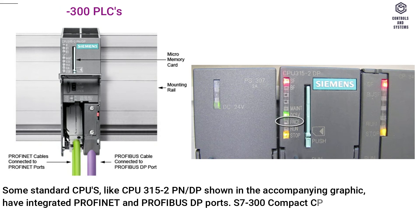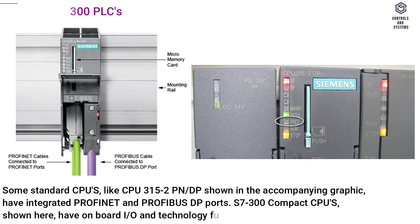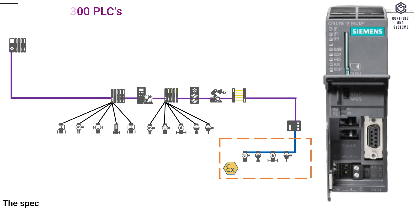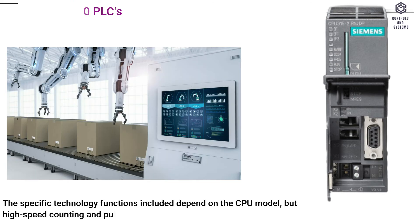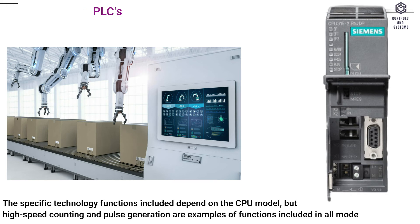S7-300 Compact CPUs, shown here, have on-board I-O and Technology Functions. The specific technology functions included depend on the CPU model, but high-speed counting and pulse generation are examples of functions included in all models.